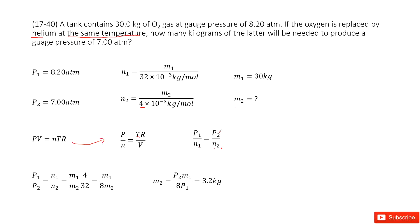We need to convert this to a ratio of pressure and mass. From this equation, we can see P1 over P2 equals N1 over N2.